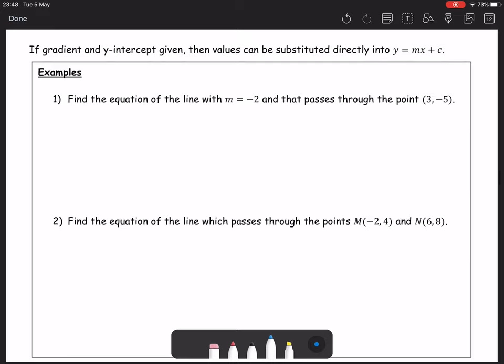So a couple of examples, find the equation in a line with m equals minus 2 that passes the point 3, negative 5. If we're asked to find the equation in a straight line we're looking to find y minus b equals mx minus a. To do that we need our point and we need our gradient.